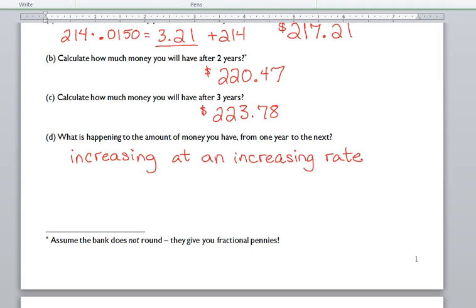If every time a year passed, it increased by the same amount, that's a linear function. But, this time, every time a year passes, the amount it increases by is a little bit more than the year before. Increasing at an increasing rate is exponential growth.